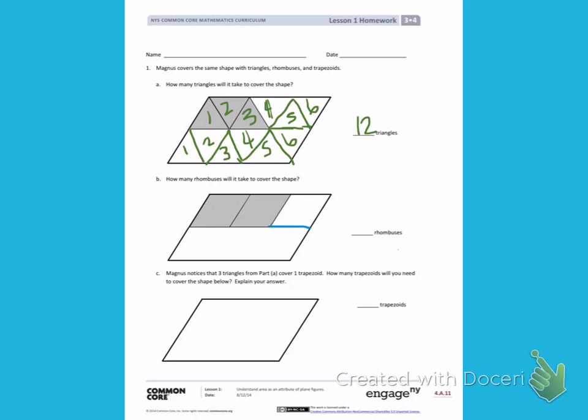Let's see what happens when I continue drawing the lines down below. One, two, three. I have three again. So this time I have six rhombuses that cover the shape on part B.